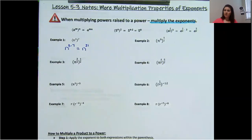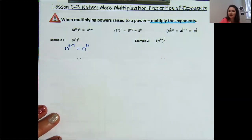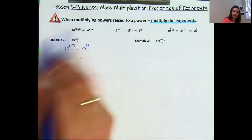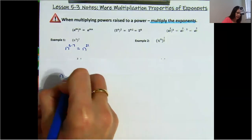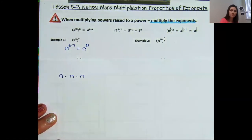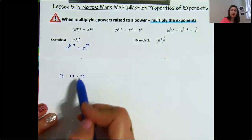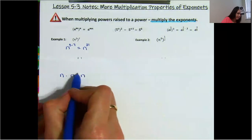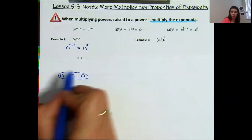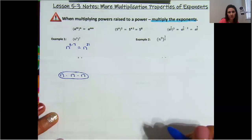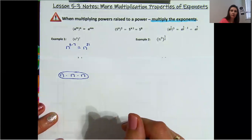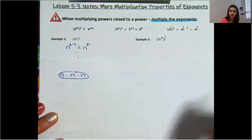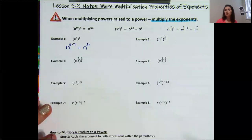Some of you may want to know why this is happening. I'm going to explain it anyway. If I have n to the power of 3, that means n times n times n. In this problem, it's asking us to do that seven times. So if I have seven groups of three n's, basically what you're doing is multiplying the three times the seven groups of three, which gives you 21. That's what you're doing in this case.